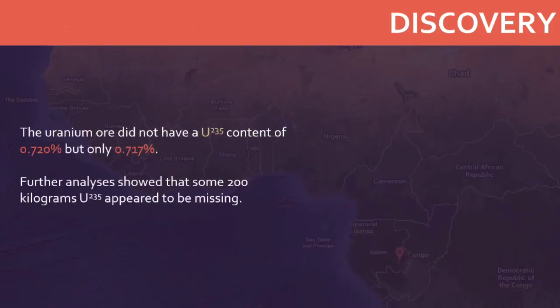During a routine isotopic measurement of uranium ore from Gabon, the French noticed something very strange. The uranium ore did not have a uranium-235 content of 0.720%. Elsewhere in the Earth's crust, on the moon, and even in meteorites, uranium-235 atoms make up 0.720% of the total. Rather, the uranium ore was anomalously depleted in uranium-235, containing only about 0.717%. This tiny discrepancy was enough to alert French scientists that something strange had happened.